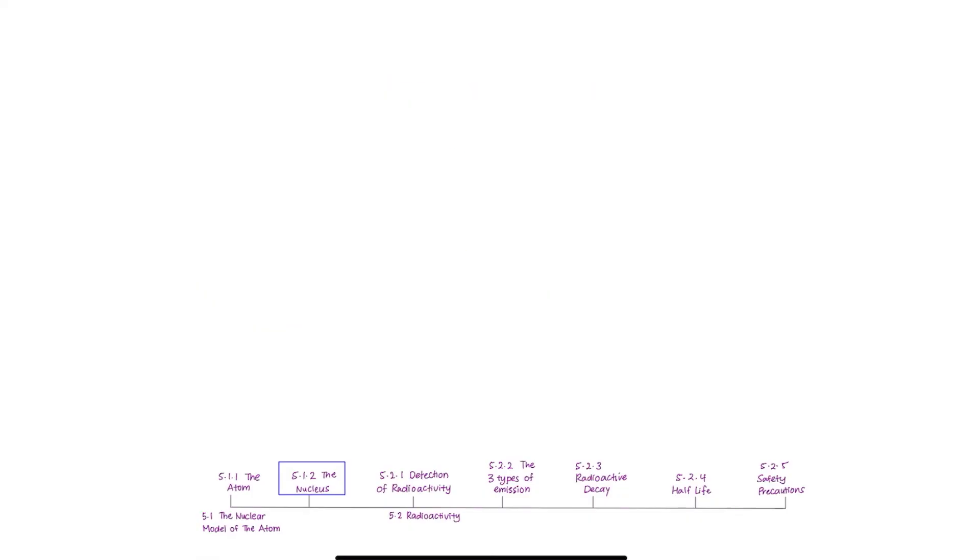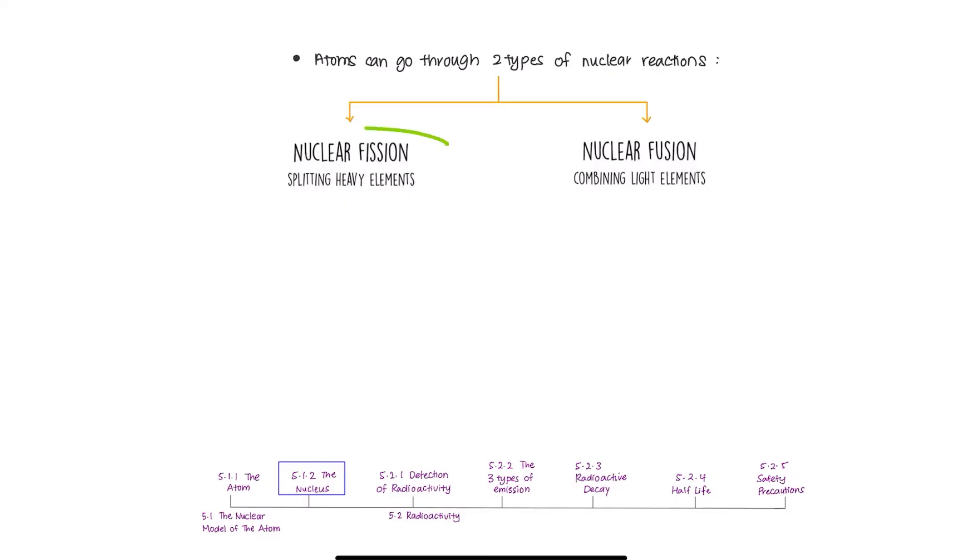Atoms can go through two types of nuclear reaction. First, nuclear fission. Fission means when you split something. And nuclear fusion, fusion is when you combine or join things together to make it bigger. Now let's dive deeper into nuclear fission.